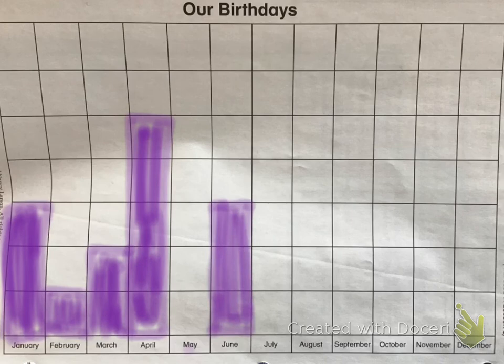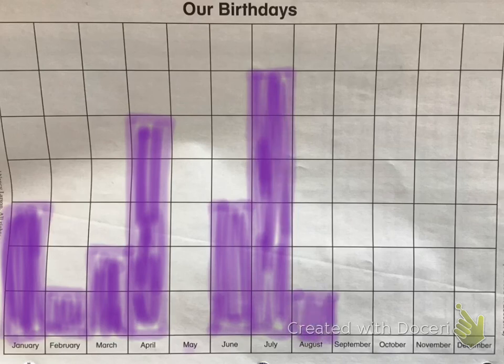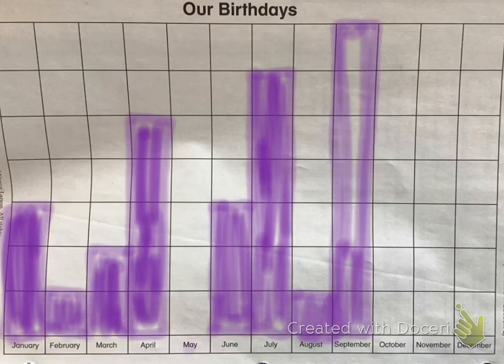July, let's say six people were born in July. One, two, three, four, five, six. And I fill it in. One person born in August. Let's say seven were born in September. We go all the way up.